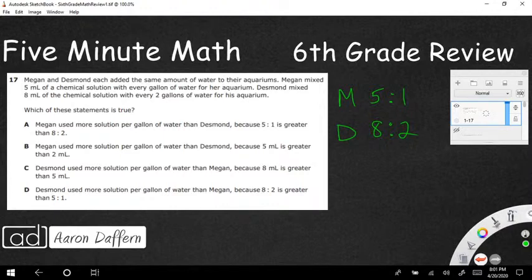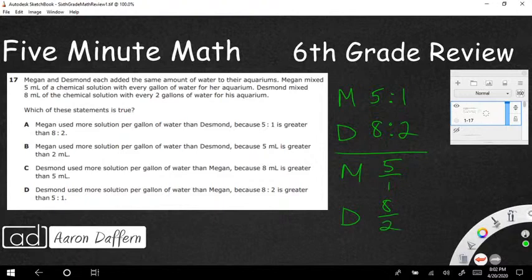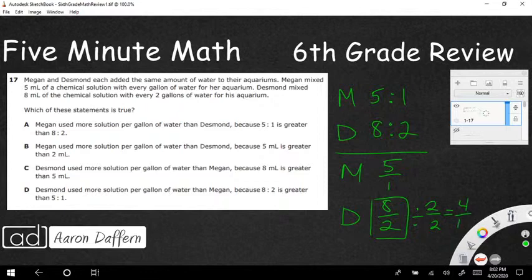And then Desmond, he also mixed some chemical solution, but he had a different ratio. His was 8 to every 2. I always like to look at ratios as fractions. So I'm going to write Megan as 5 over 1, and then Desmond as 8 over 2. But you're probably noticing that 8 over 2 can be reduced. You can simplify it by dividing top and bottom by 2, because you can treat ratios just like you do fractions. And now we've got a ratio of 4 to 1.